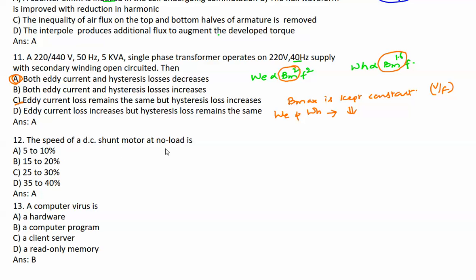The speed of DC shunt motor at no-load is - the reduction in speed of the DC motor is almost 5 to 10% of its full load capacity. That means actual speed will be 85 to 90% of the no-load speed only. The answer is A. Next: A computer virus is hardware, a computer program, a client server, or read-only memory. As you know, virus is created by computer program, so the answer is B. Thank you friends. If you like my video please subscribe, share and comment. Hope you're preparing well and my video lectures will help you. Thank you, have a nice day.